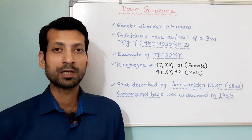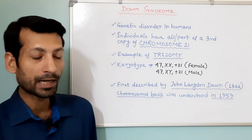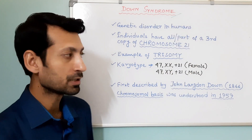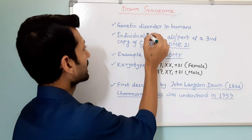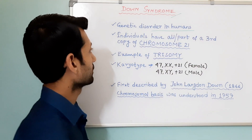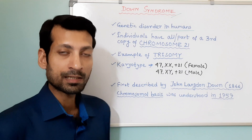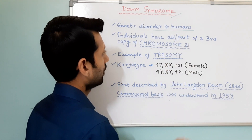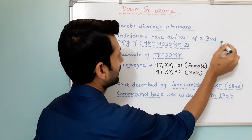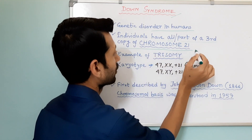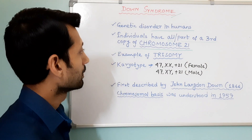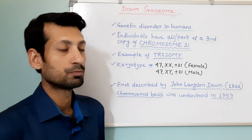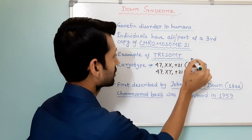Hello viewers, welcome to my channel Biology Notes. Today I am going to discuss about Down syndrome. Down syndrome is a genetic disorder in humans. In this condition, the individuals have all or part of a third copy of chromosome 21. The extra chromosome 21 in Down syndrome is an example of trisomy.